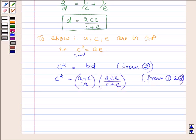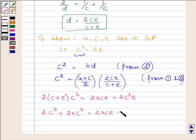Now on cross multiplying, we have 2 times C plus E into C squared is equal to 2ACE plus 2C squared E, which further implies 2C cubed plus 2C squared E equals 2ACE plus 2C squared E. Now 2C squared E cancels out and we have 2C cubed minus 2ACE is equal to 0.